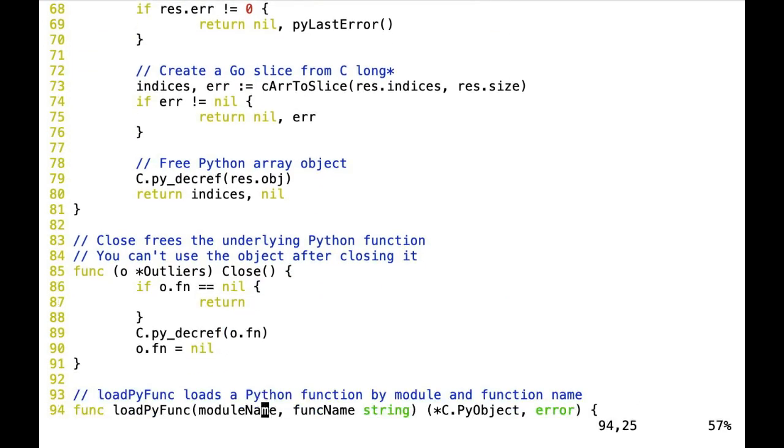For bookkeeping, we also have a close, and we saw it before on the outliers object. This one is calling Py_DecRef on the function itself. So this function object also consumes memory, and we can free it. So we have our code going all the way down and all the way up. We didn't do any serialization, we use the same underlying memory from here and there. This is because both NumPy and Go use the same representation in memory for a float or an integer. And we did very little memory copying, and this is the absolute minimum. When we decided to make the code simpler and easier to use with memory management, we copied the indices from the memory managed by Python to the memory managed by Go.